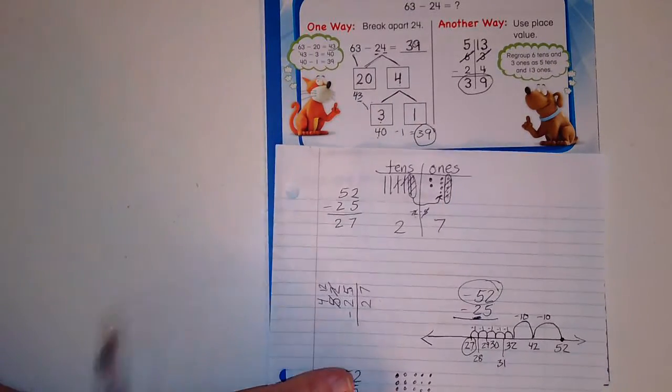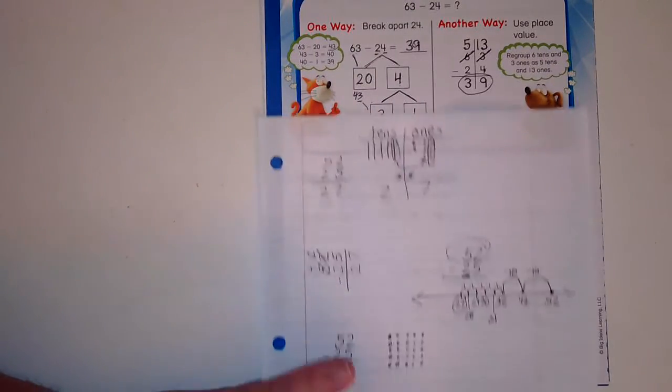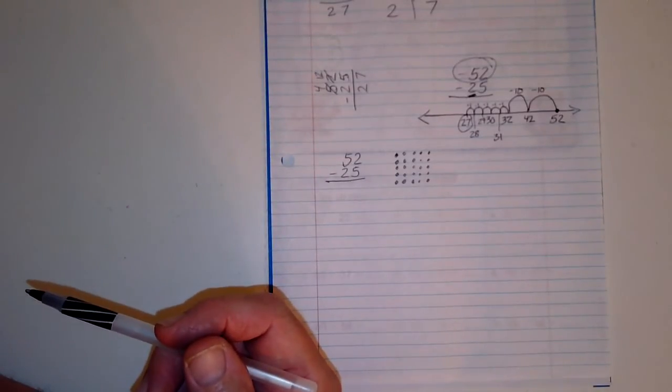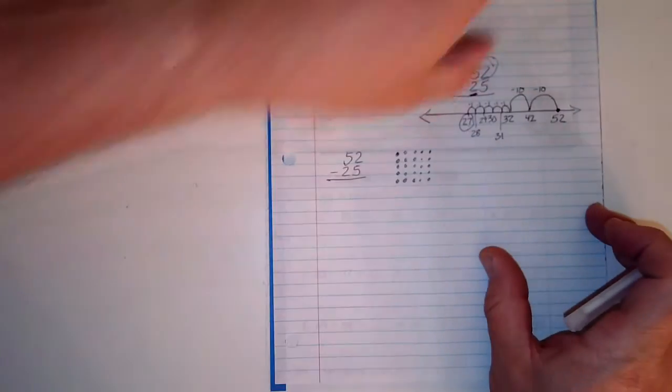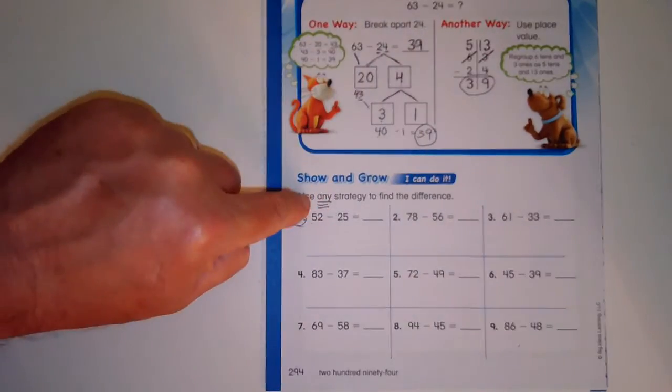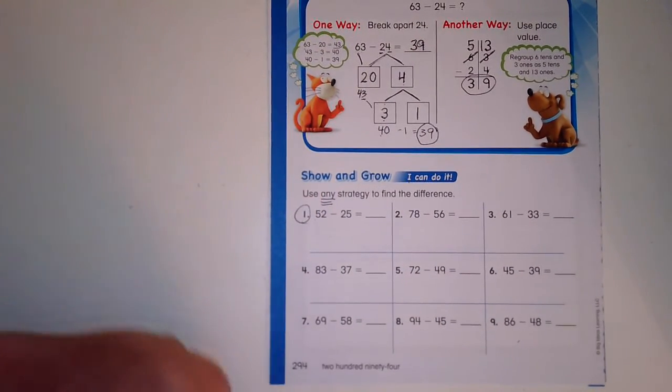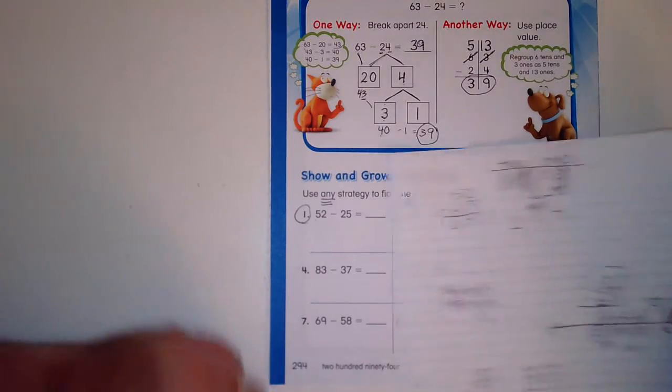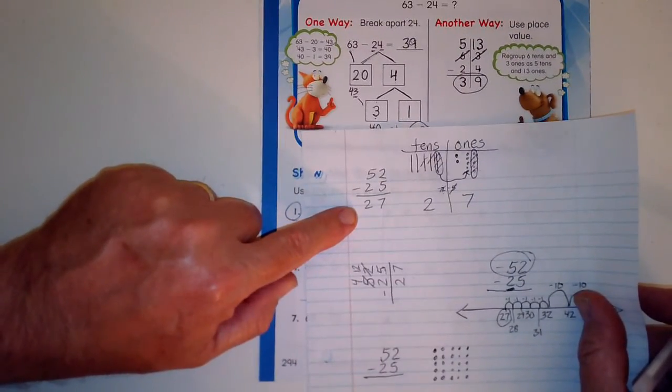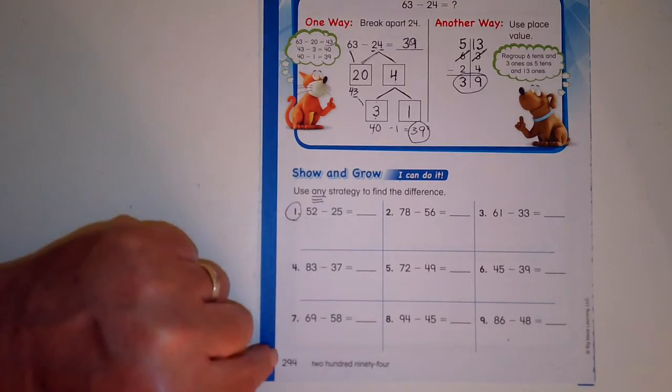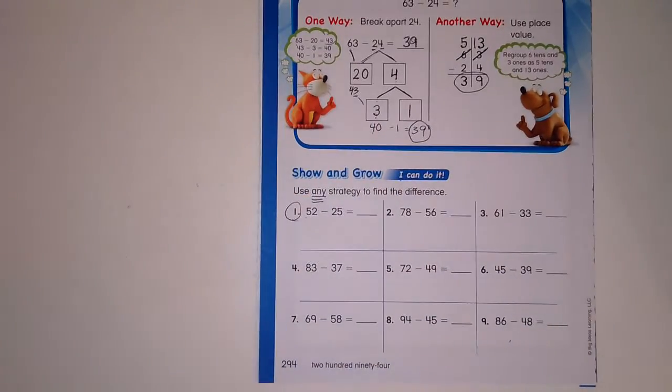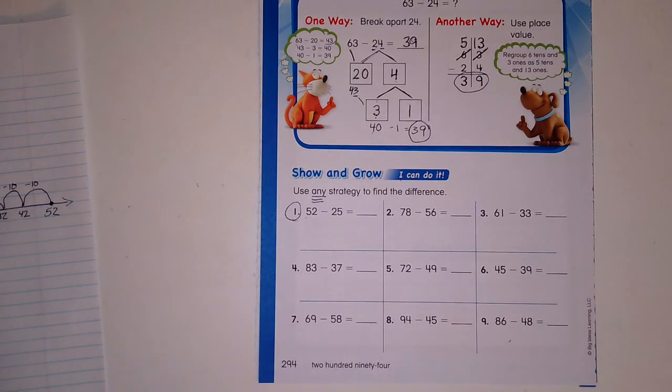I'm not going to take all of our time because we're running out of time. But if you want to do it like this, it's absolutely okay. Use your models, do your regrouping, use an open number line, break it apart - whichever way you want to do it. It even says right here 'any strategy to find the difference.' I want you to do page 294. I will post the answers later today. Have a great day.